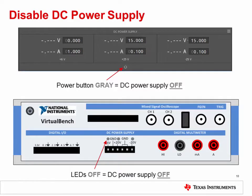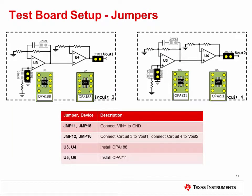Make sure to disable the DC power supply before setting up the test PCB. In the VirtualBench software, click the power button in the DC power supply area to turn off the power. Next, check the front panel of the VirtualBench to make sure the LEDs are off, and also ensure that the function generator is off. To prepare the test board for the measurement, install the jumpers and devices on circuit 3 and circuit 4 as shown.